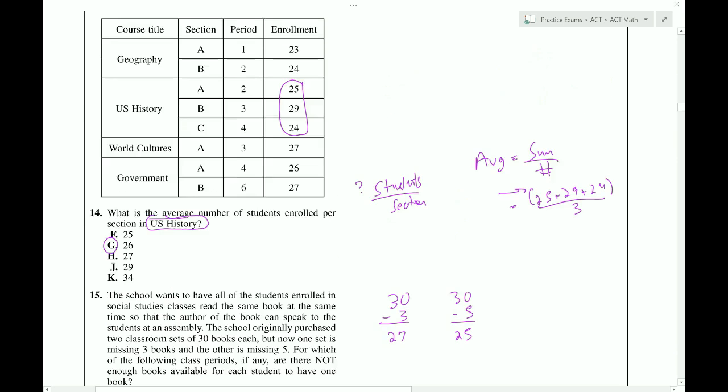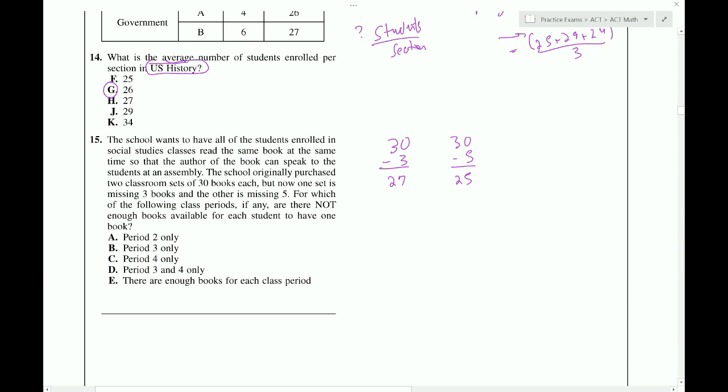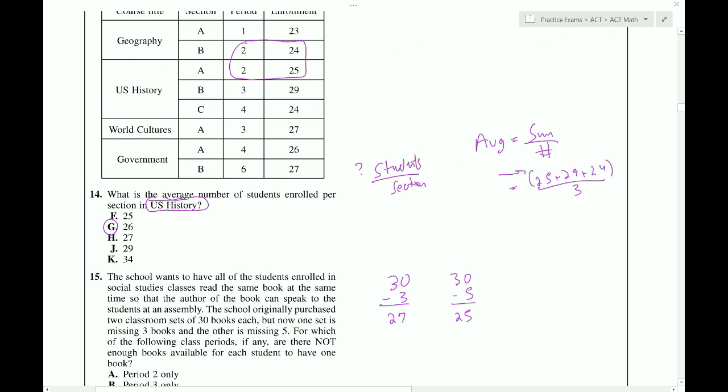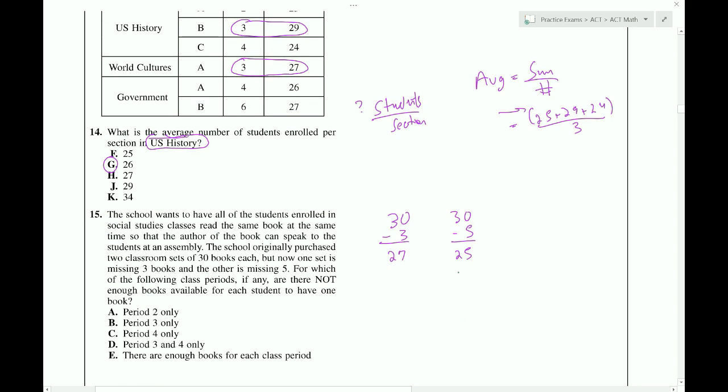Now we have to look at each period and see how many books are required. In period one, we have an enrollment of 23. So, we can use either set and we'll be fine. In period two, we have two classes here. One of which has 24, one of which has 25. So, we can give the 25 here and the 24 here and there's two books to spare and here there's one book to spare. So, there's enough books for period two as well. Now, for period three, we have this and we have this. So, the question is, do we have enough books? If we have 29 students, the answer is no, we're not going to have enough books, because there's too many students in comparison to the amount of books that are available. So, period three is going to give us a problem.